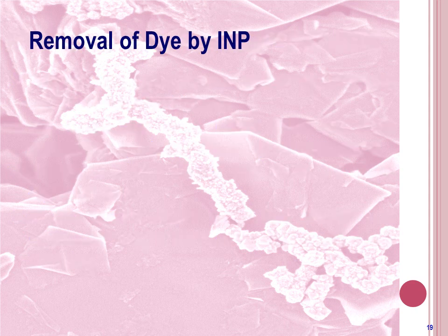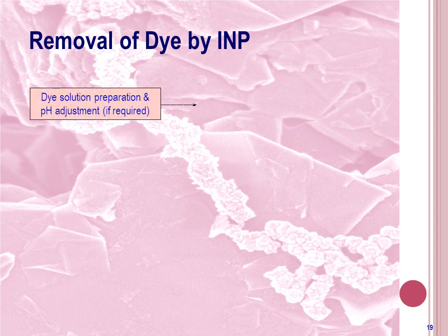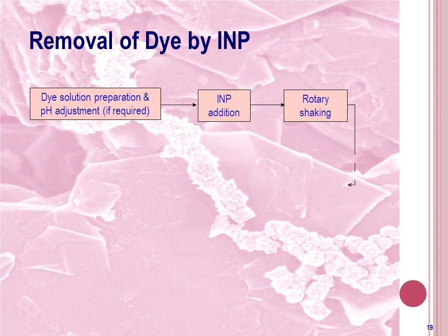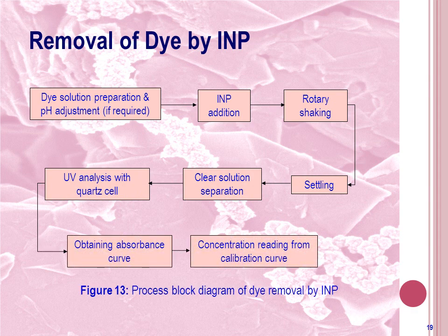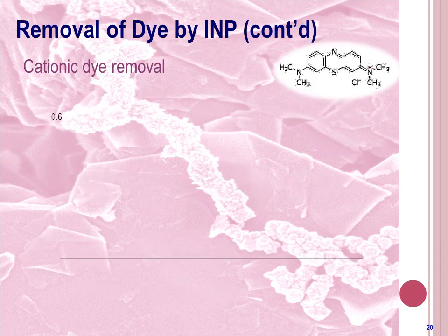Now let's move to the dye removal by application of INP. In this procedure, dye solution was first prepared and INP was added to the solution. The solution was then shaken in a rotary shaker. After shaking, the solution was settled for a while and the clear treated solution was separated from the top and taken in a cuvette for UV absorbance readings in the UV spectrophotometer.